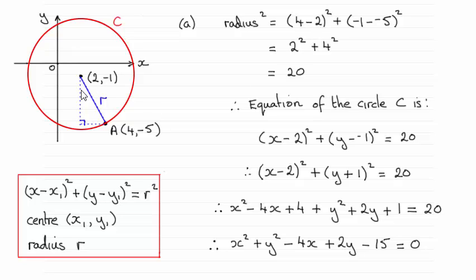And the difference between the y coordinates, that will be -1 minus -5. So that will be a length of 4 units, and so I've squared that. So that gives us 20.